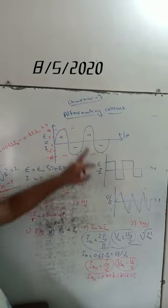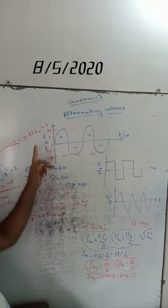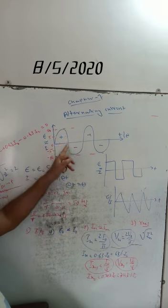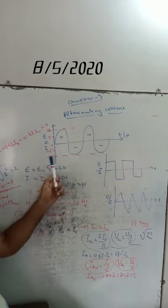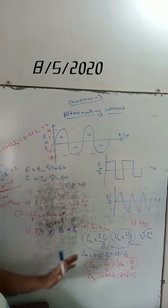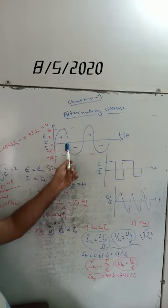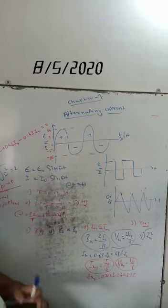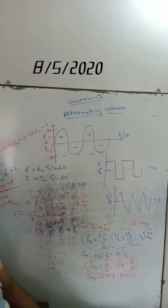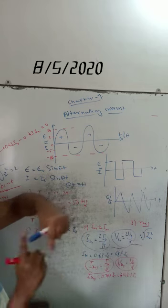Now the seventh chapter: alternating current. The induced EMF or current, one in which changes continuously in each half cycle — increasing to maximum, decreasing to zero — is called alternating current. Alternating current is produced or generated by using an AC generator or dynamo, which rotates the armature to generate alternating current.